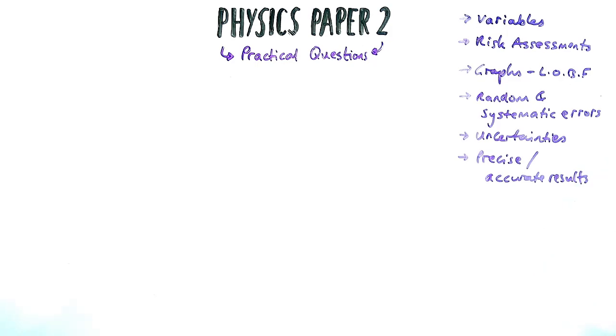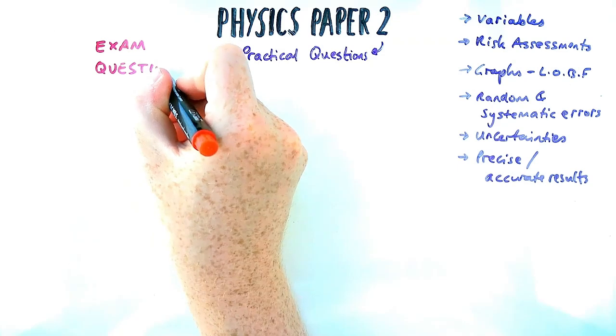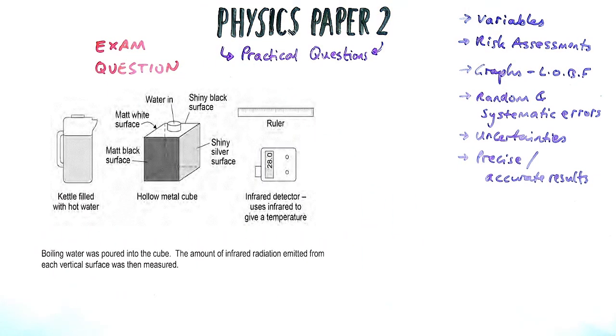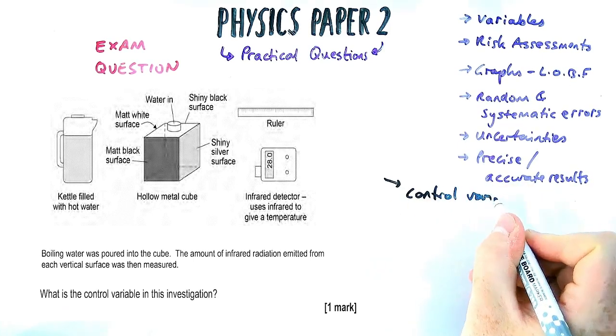So the first practical question we're going to look at is a required practical. I'm going to try and make them as based around paper two as possible, but all this stuff applies to any physics paper. So this required practical is to do with infrared radiation, essentially pour boiling water into a cube, you measure the infrared coming off each side to find out which is the best emitter.